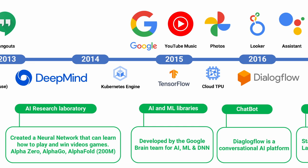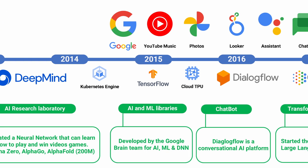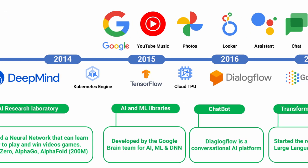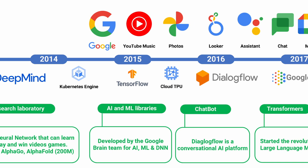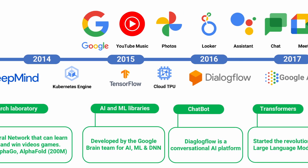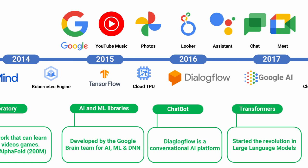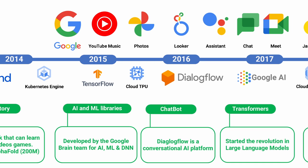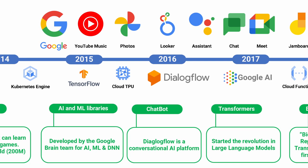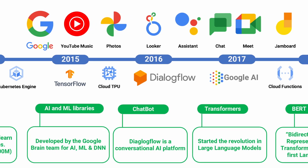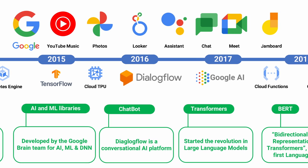In 2015, Google created the TensorFlow libraries for AI and ML, developed by the Google Brain team. Around 2016, we also have Cloud TPUs — Tensor Processing Units — and Dialogflow, a conversational AI platform.